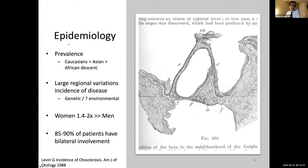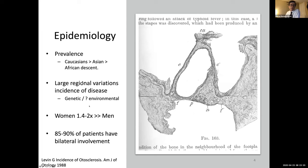Otosclerosis is a condition that used to be much more prevalent than it is today, partly due to a large backlog of cases operated in the 1960s and 1970s. Within certain populations it remains more prevalent. Caucasians of northern European descent have a higher incidence than Asians; South Asians have a much higher incidence than East Asians; and people of African descent rarely have otosclerosis. Women are affected almost twice as much as men, and up to 80–90% of patients will have bilateral ear involvement.